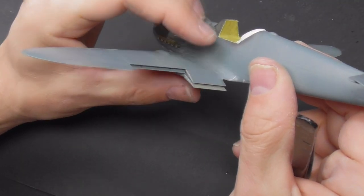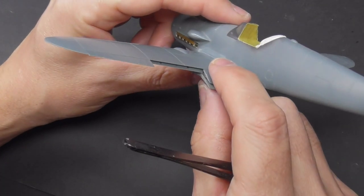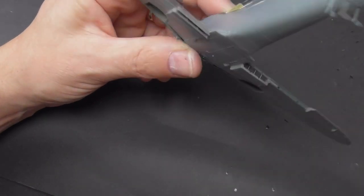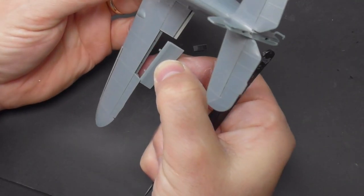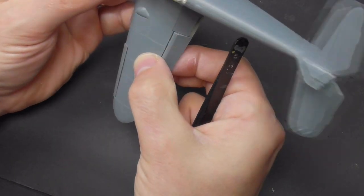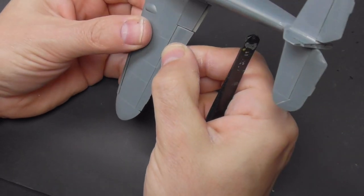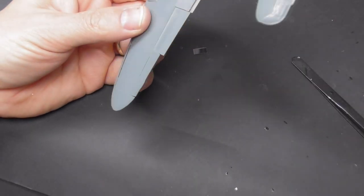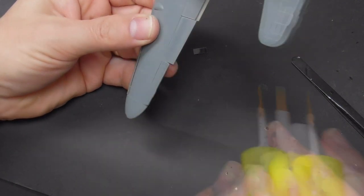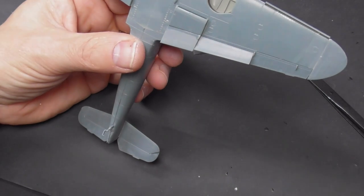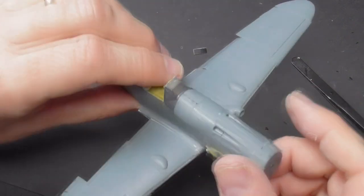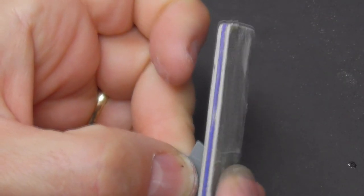And then lastly the outboard flaps go on. They just click into place, didn't really need any glue for these, but you know, belt and braces. And there we are, airframe is pretty much done.